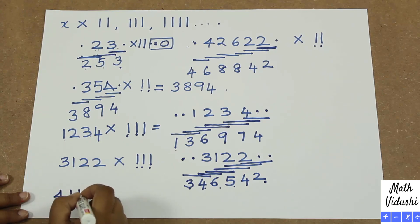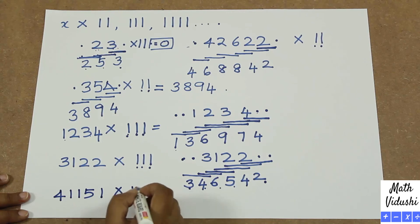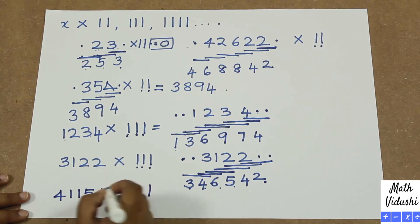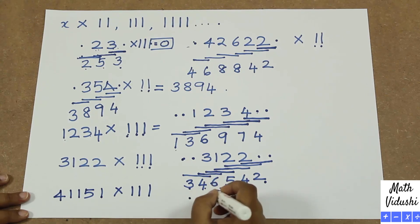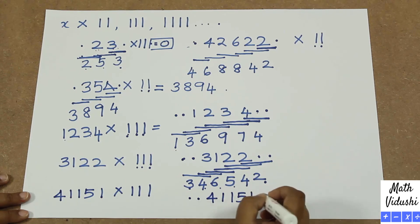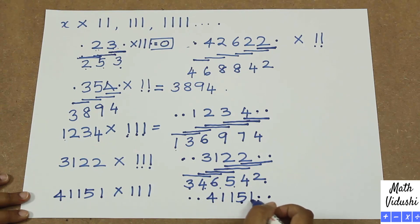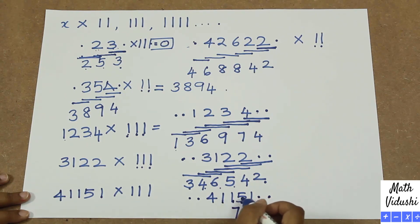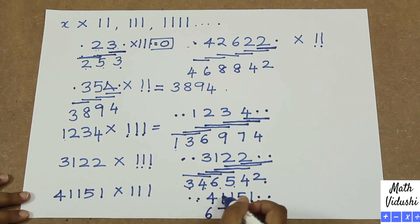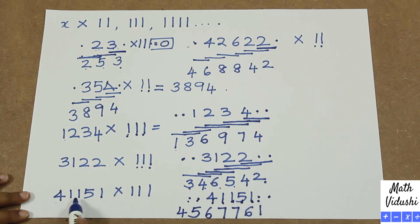Let's take a 5-digit number: 41151 multiplied by 111. You add 2 dots at the beginning and 2 dots at the end. Taking 3 numbers at a time from the units end: 1+0+0=1, 5+1+0=6, 1+5+1=7, 1+1+5=7, 4+1+1=6 — wait, let's also get the leading digit: 4+0+0=4. So 41151 multiplied by 111 gives 4567761.